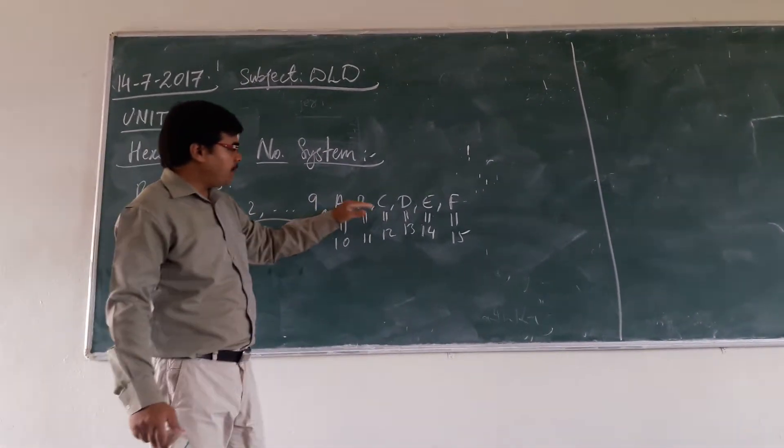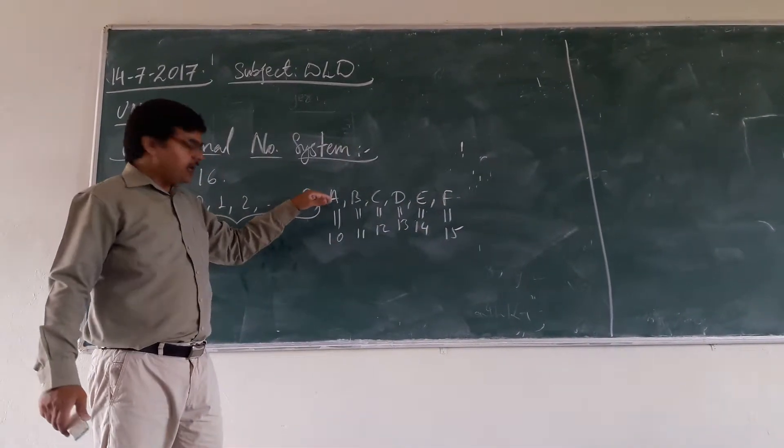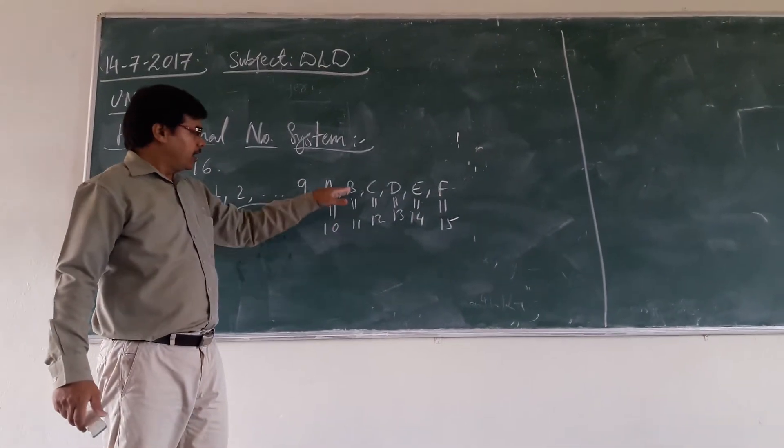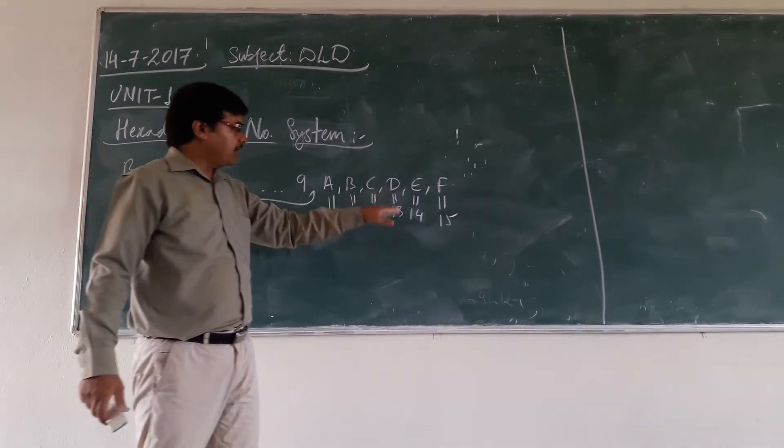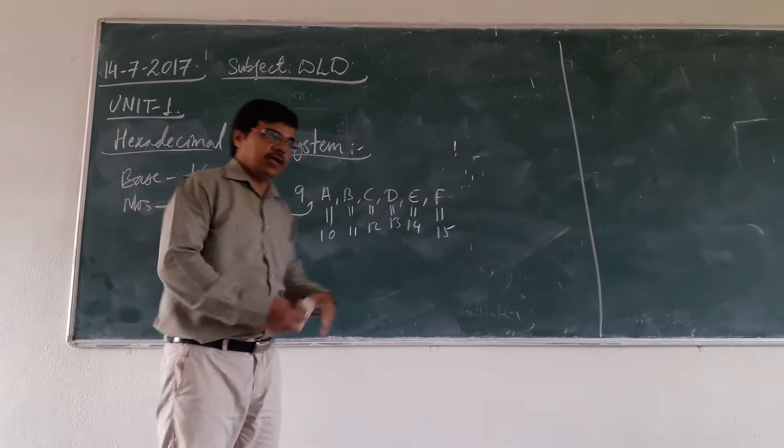you will have A, B, C, D, E, F. So, A is equivalent to 10, B is 11, C is 12, D is 13, E is 14, and F is 15.